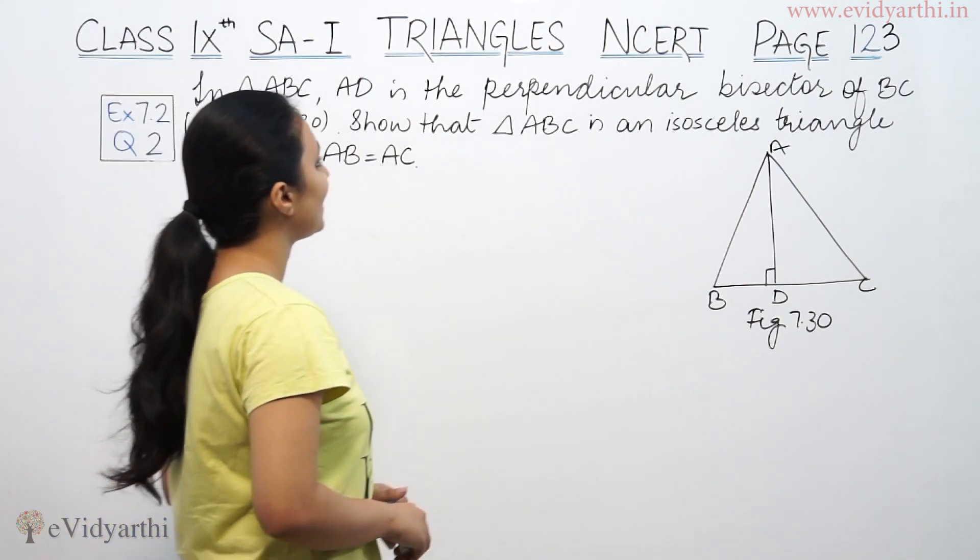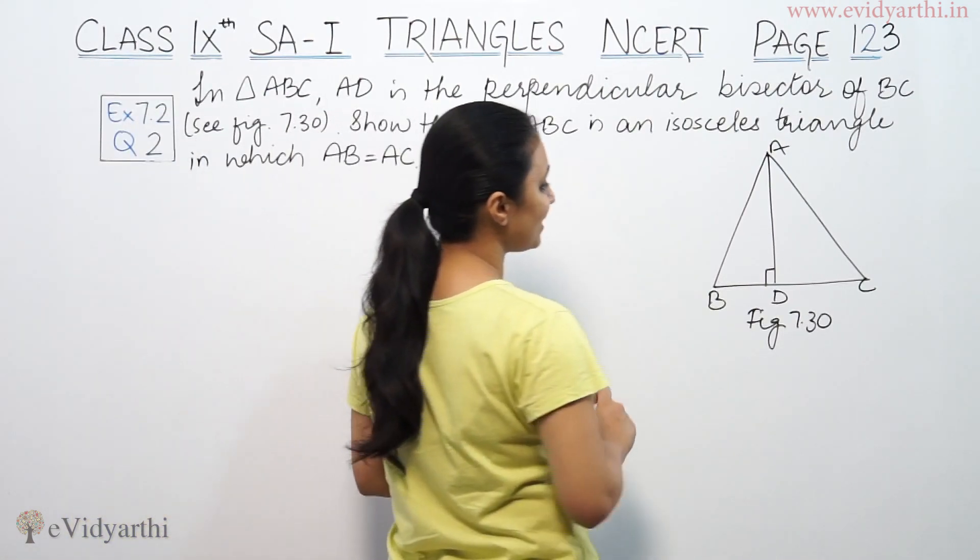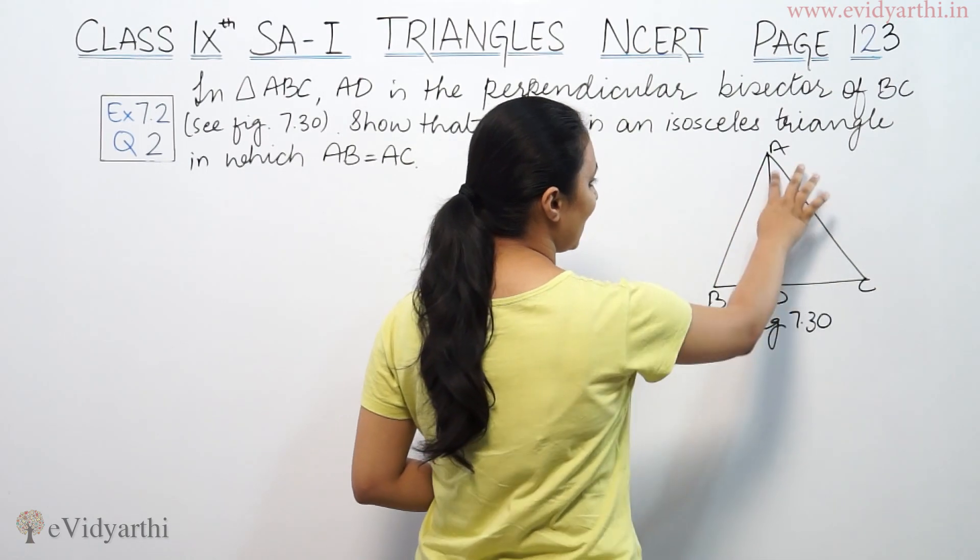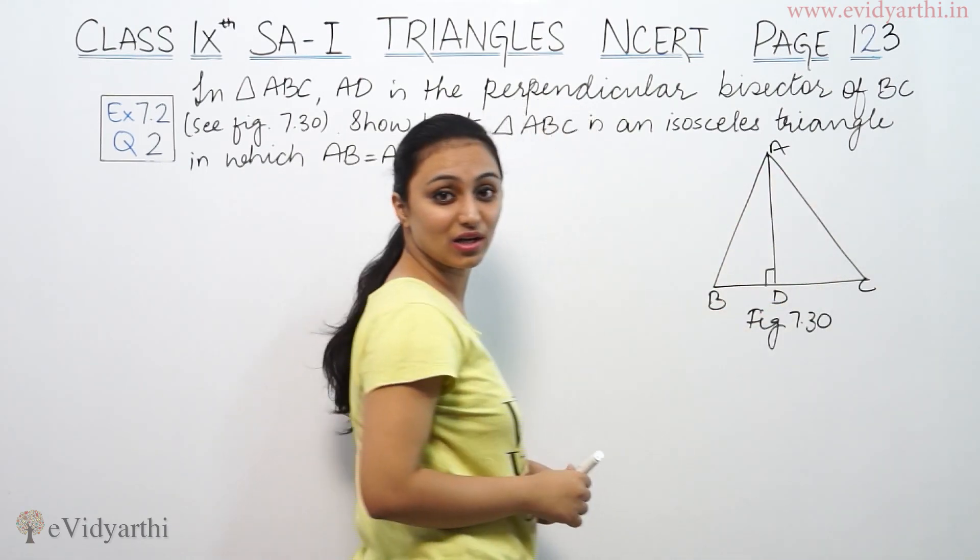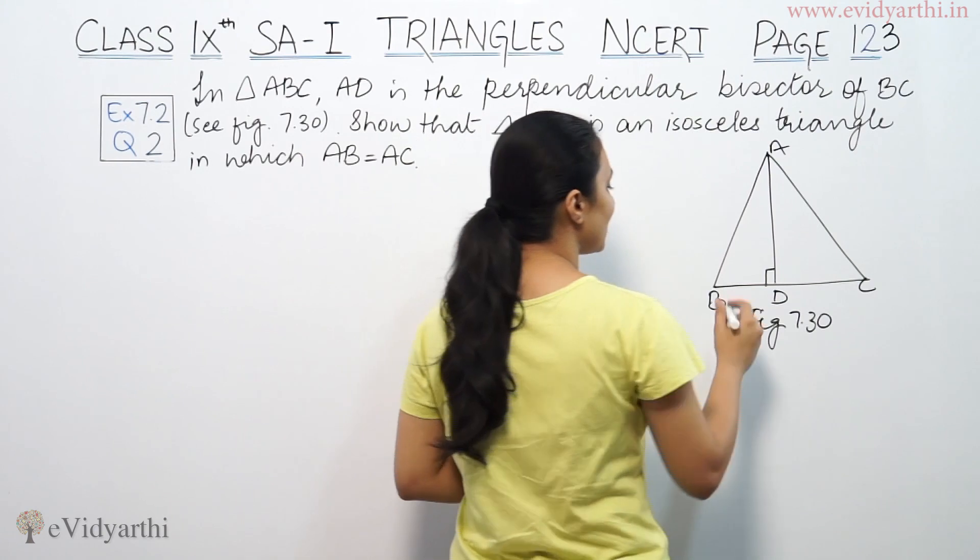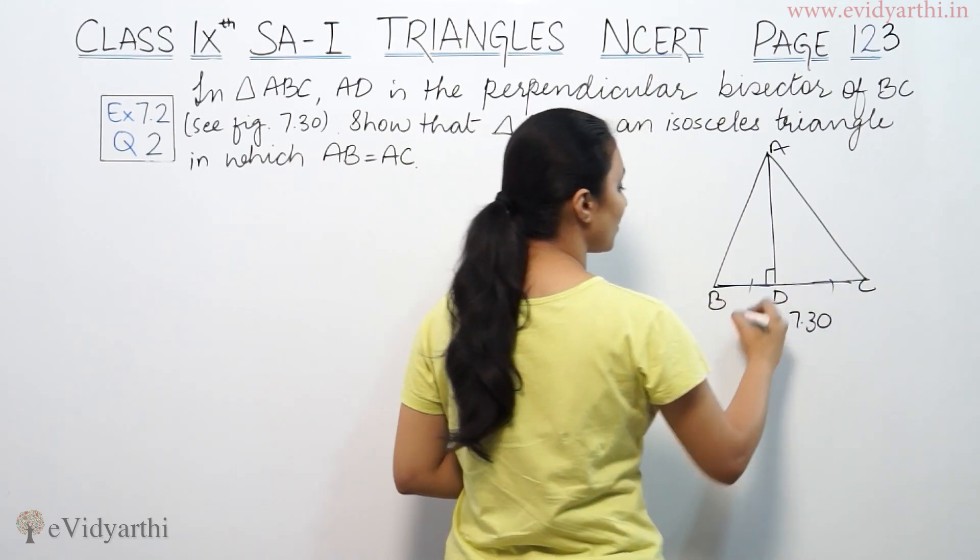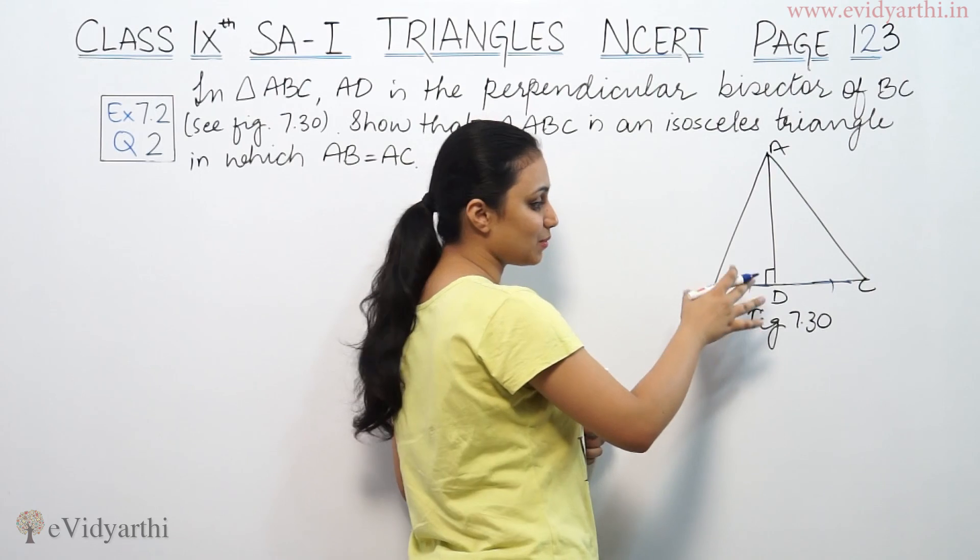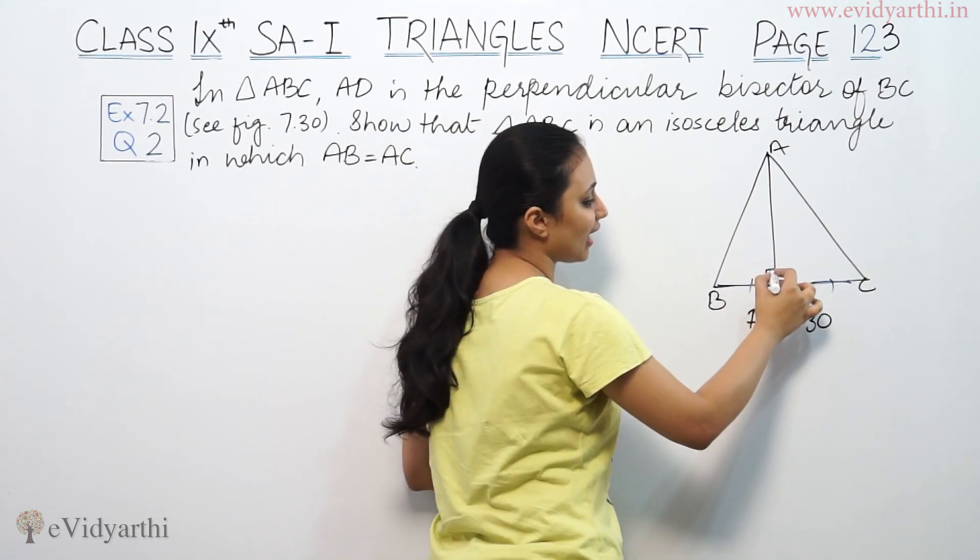This says in triangle ABC, AD is the perpendicular bisector of BC. That means this side is the perpendicular bisector. This side will divide BC and the angle is 90 degrees.